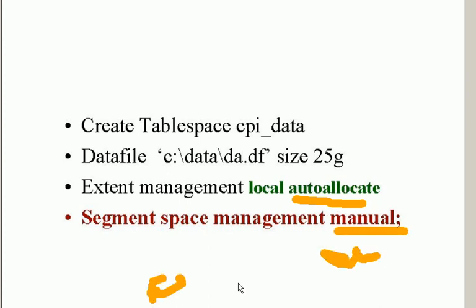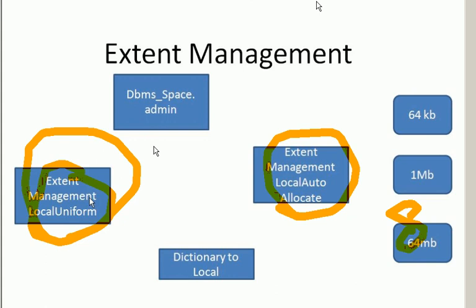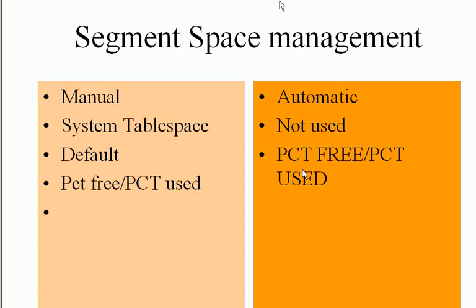When you set segment space management to automatic, the values for PCT_FREE and PCT_USED are internally determined and handled with the help of bitmaps. Now you know the different ways you can manage extents — either through local uniform or local auto allocate — and about segment space management, which can be manual or automatic. This is all in reference to Locally Managed Tablespace.